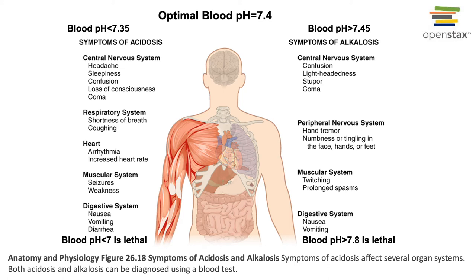If blood pH falls outside of this range it can lead to disruption of organ functions. Blood pH below 7.35 is known as acidosis and leads to disruption of the nervous system functions, specifically depression of the central nervous system causing headache and disorientation.